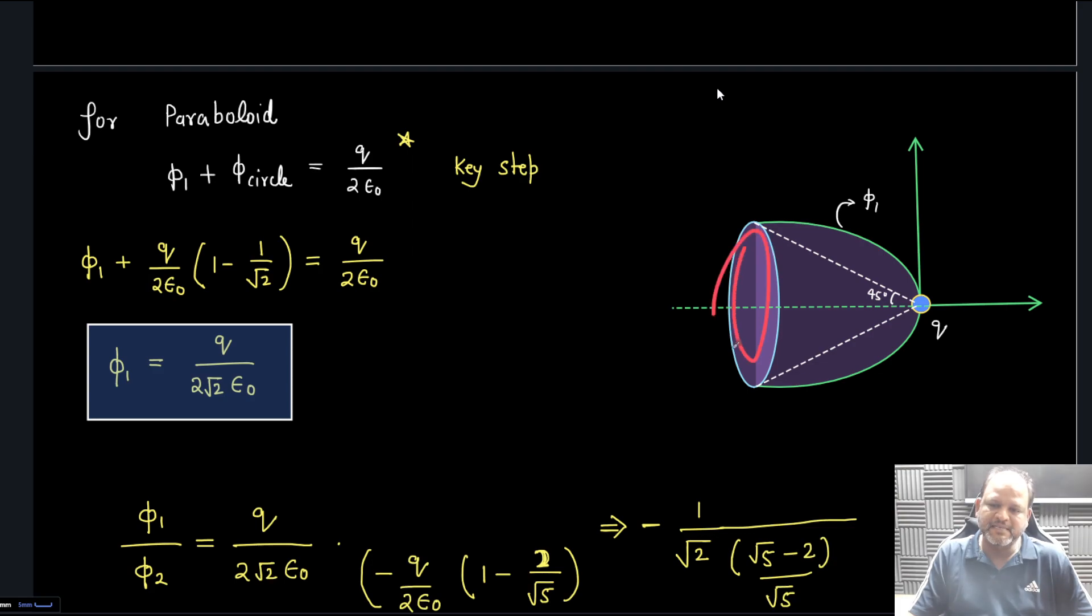Here also Φ_circle + Φ_curved = charge inside/ε₀. The smaller the charge is, we can assume almost half of the charge will be present inside. You can see the tangent at this point is vertical, so it is going to take half of that sphere.